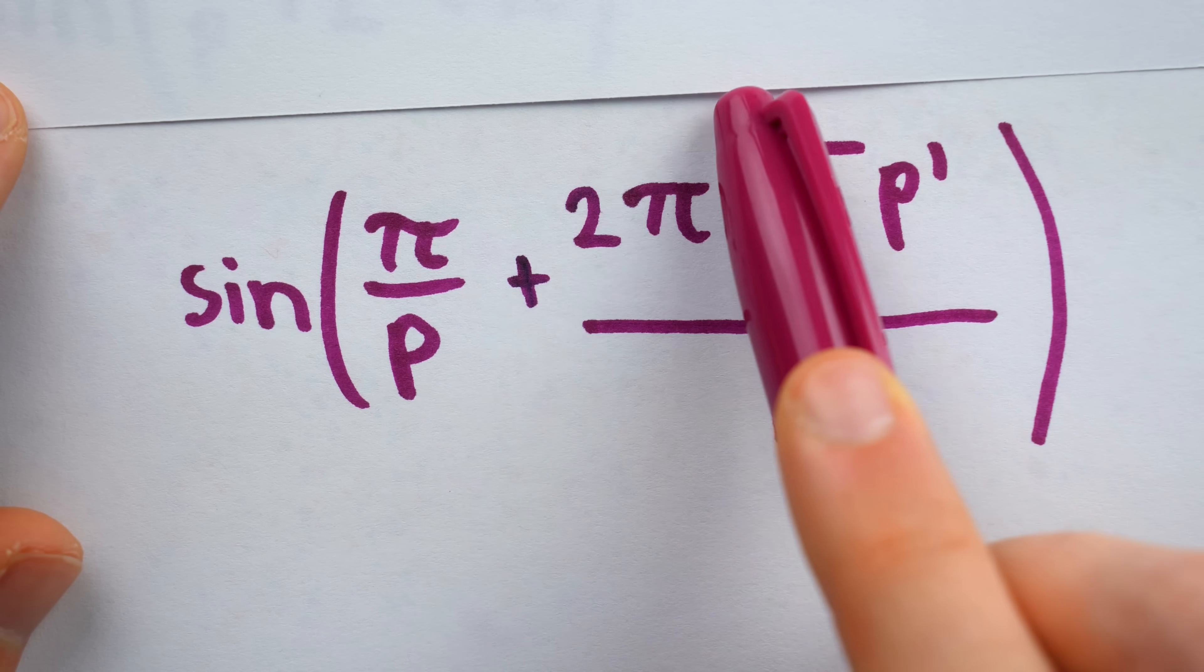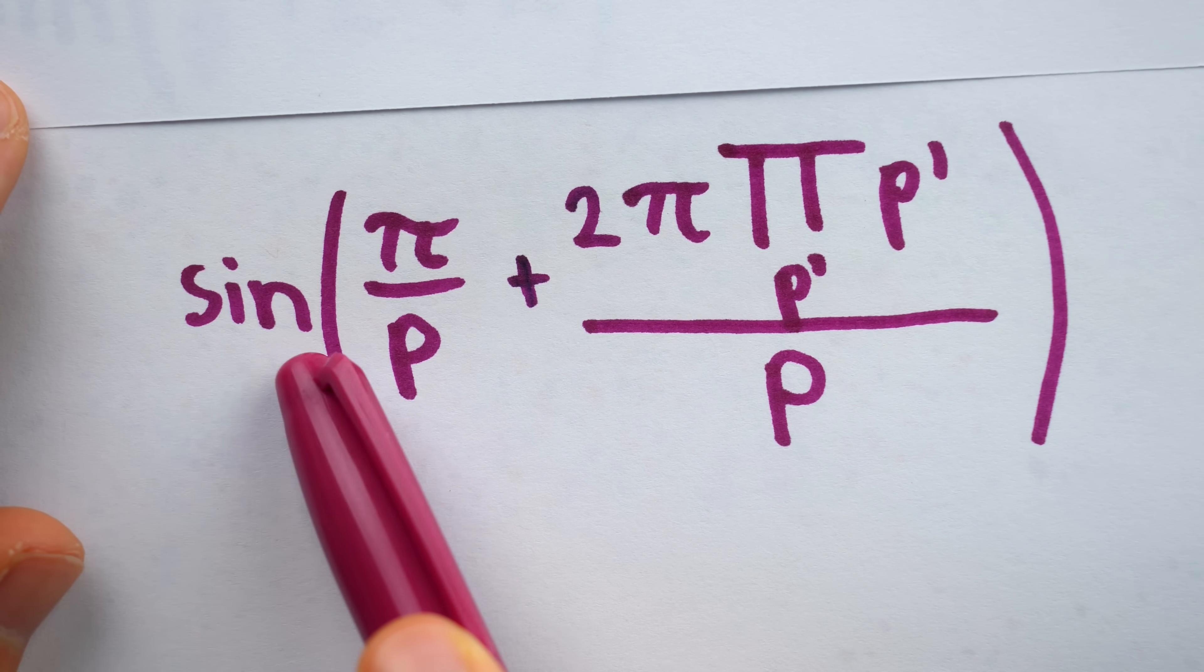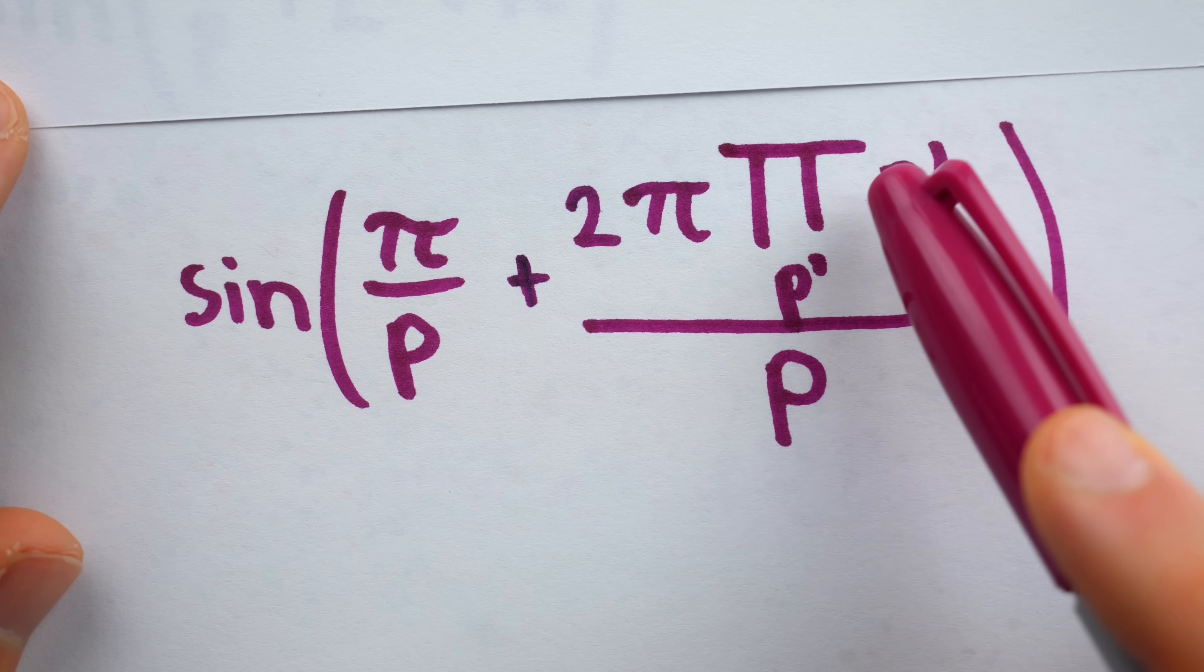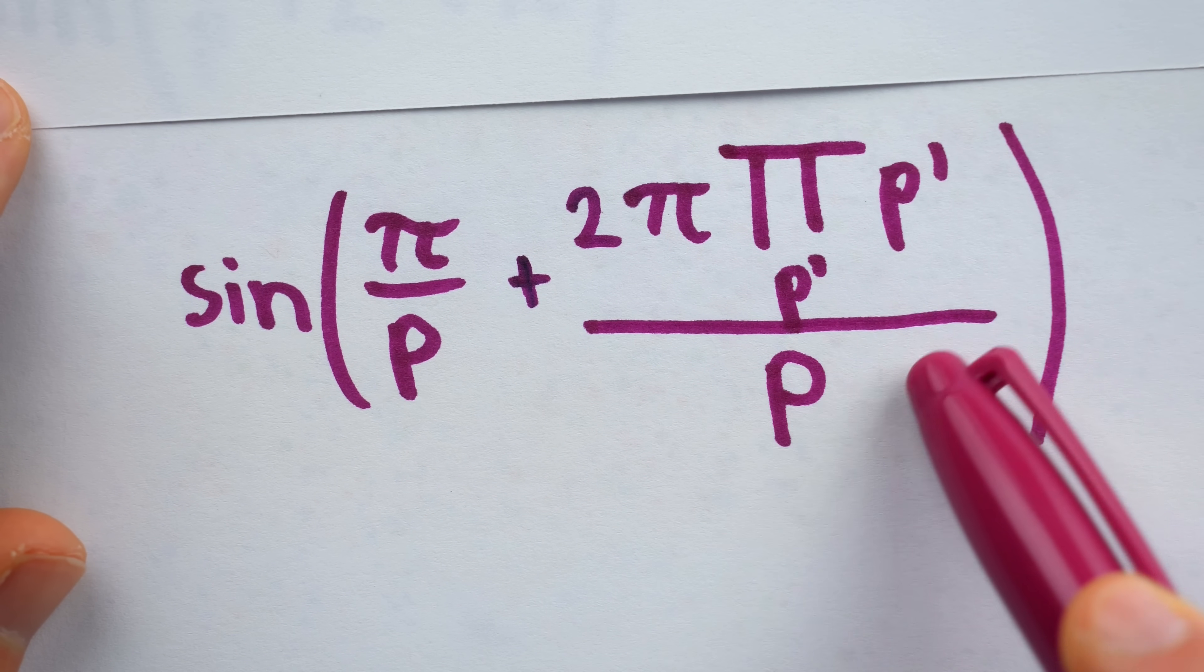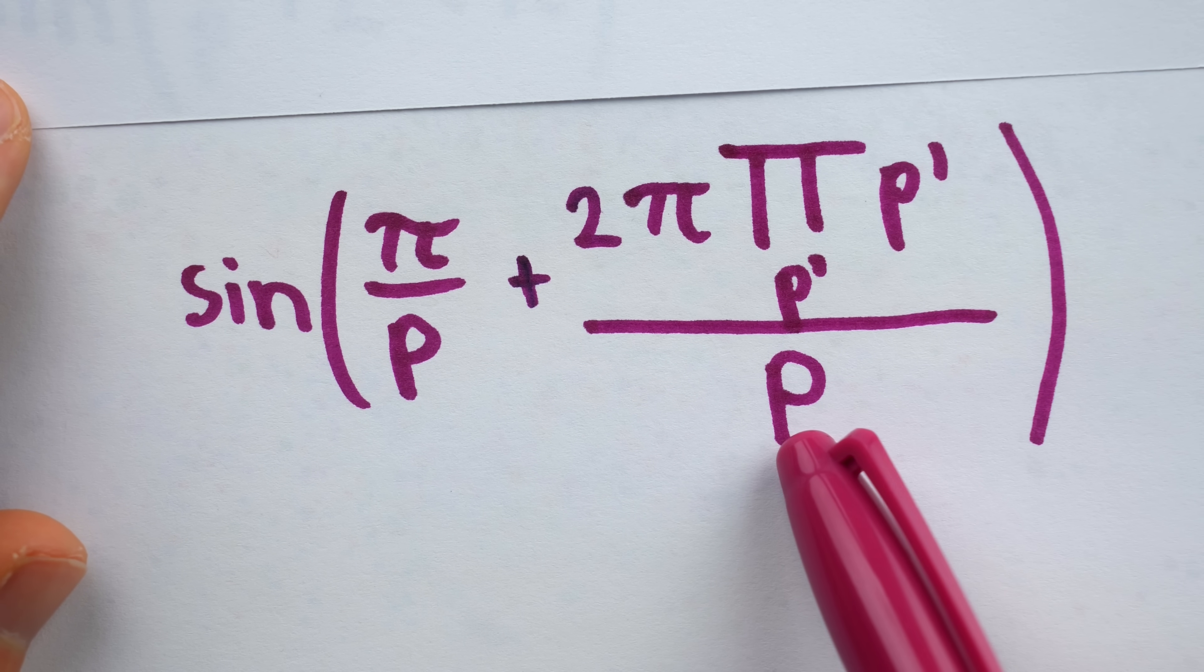We understand we can add any multiple of 2 pi inside the sine function, and its value won't change. But how do we know this is an integer multiple of 2 pi? After all, there's division by a prime number p here.